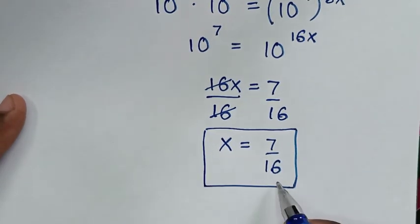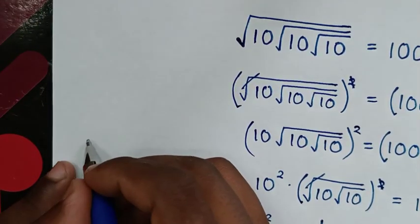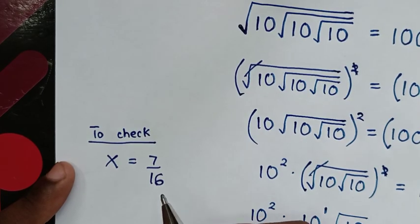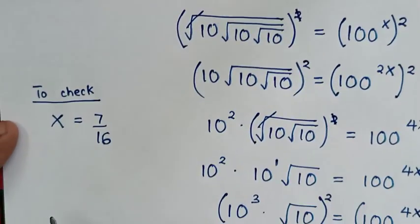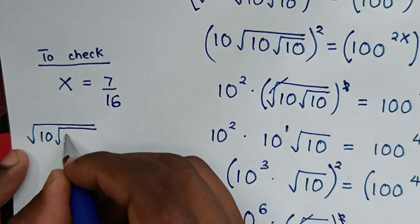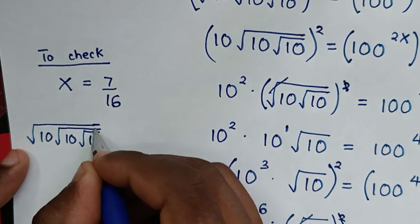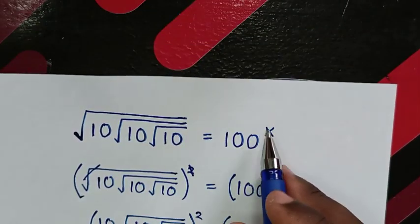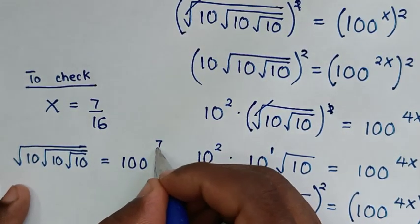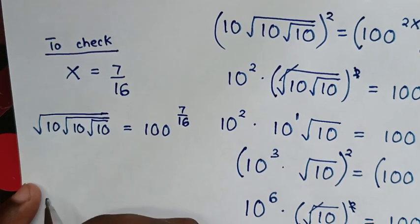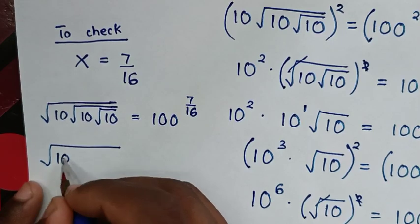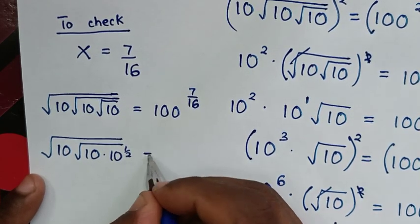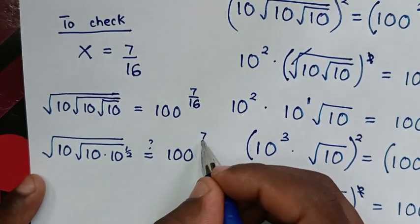Now to check if this answer is correct, we substitute x equals 7 over 16 back into the original equation: square root of 10 under square root of 10 under square root of 10, equals 100 power of 7 over 16. We rewrite the innermost square root of 10 as 10 power of 1 half.